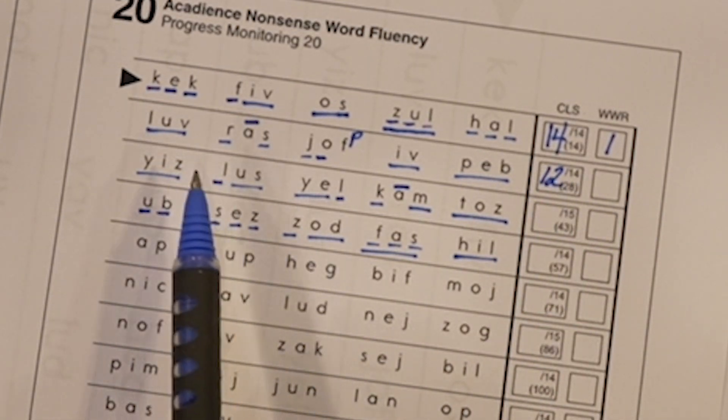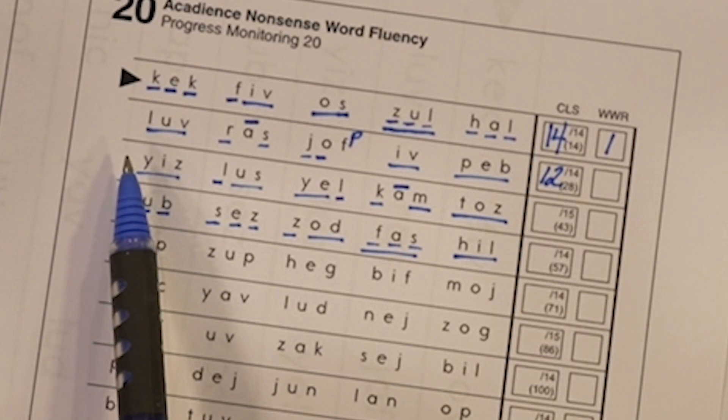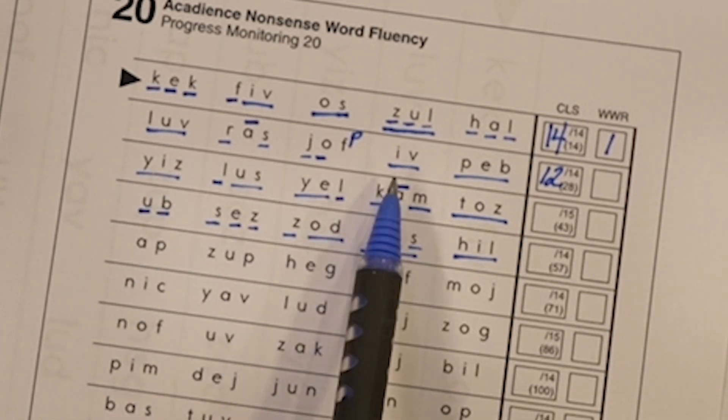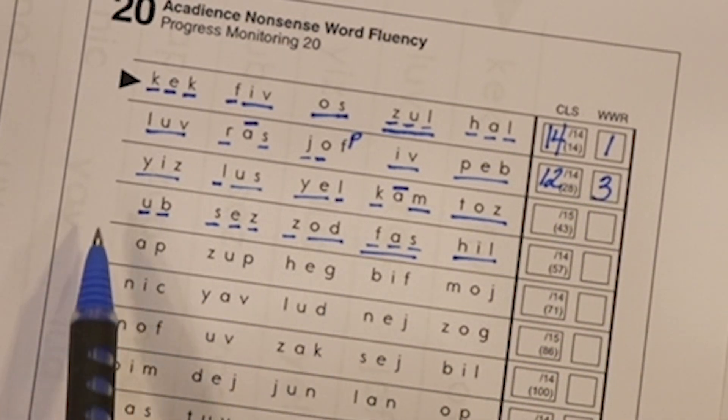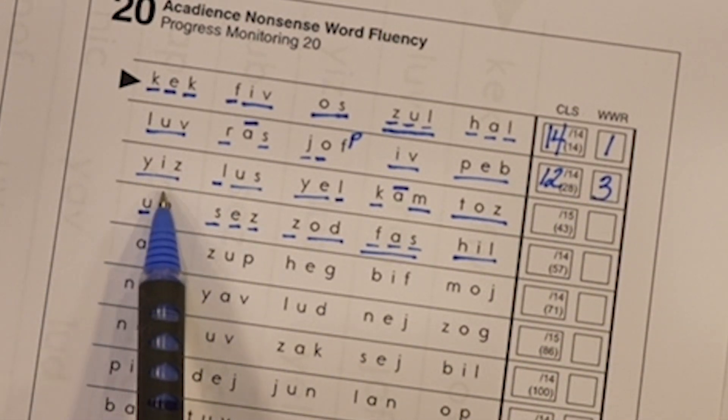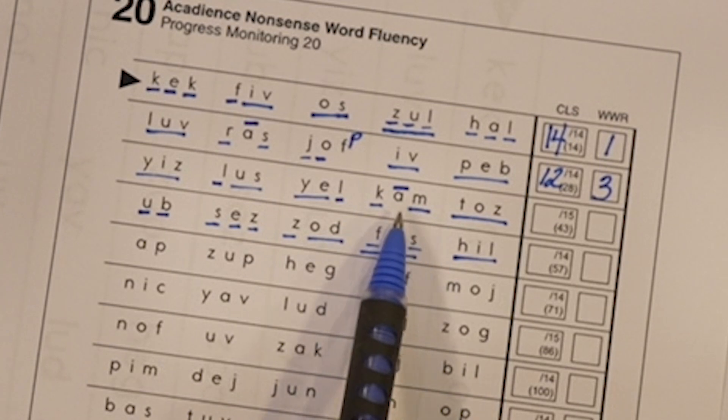And now I'm going to look for how many were whole words read correctly the first time. One, two, three. Okay, let's go to the next line.